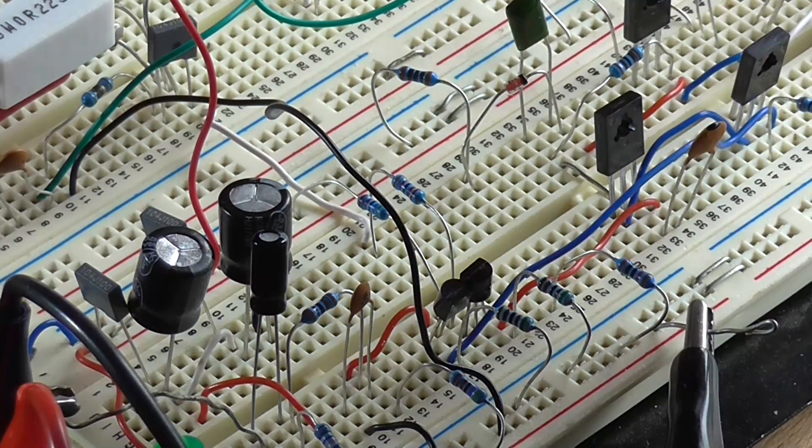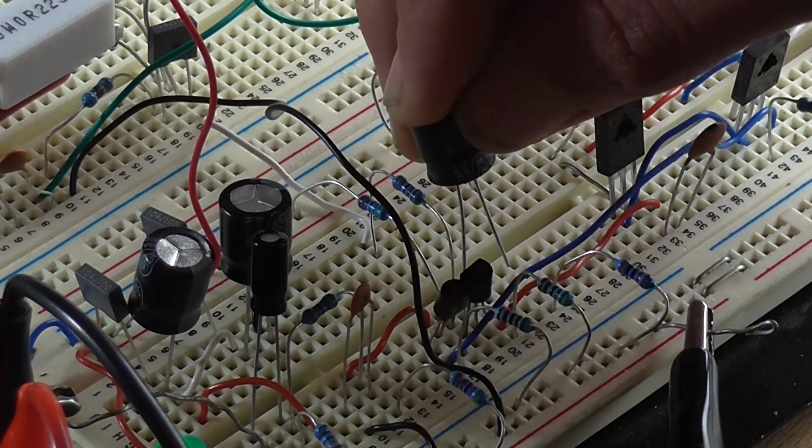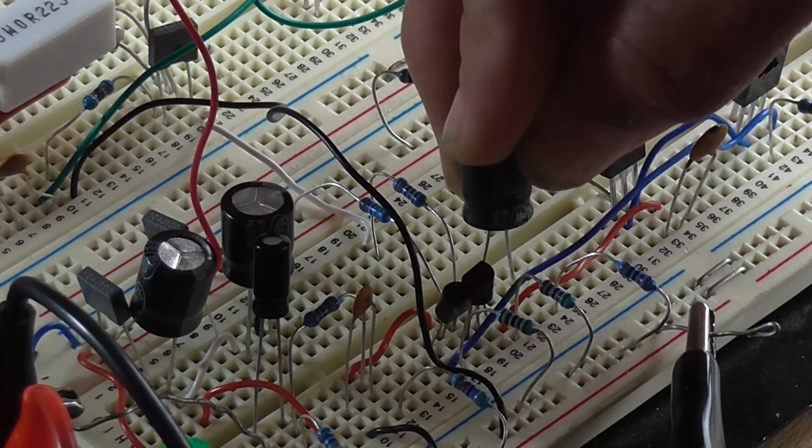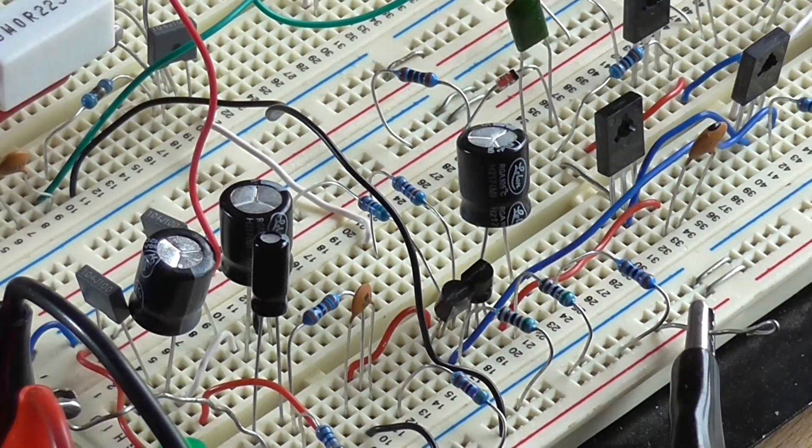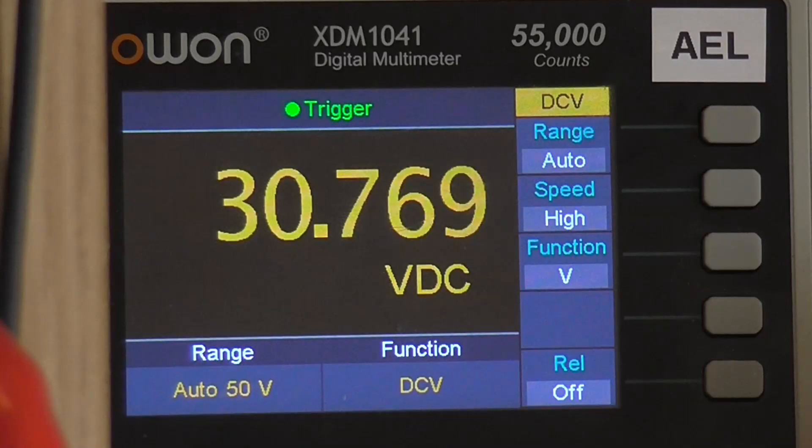Brand new capacitor. Positive goes towards the base of that transistor and to that 1k to ground which is there. All right. Turn it on. No there's still 30 volts on the output. See 30 volt DC.